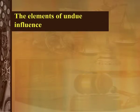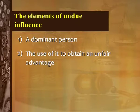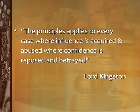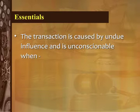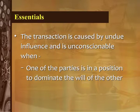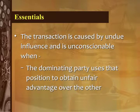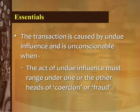The elements of undue influence are: first, a dominant person; second, the use of that dominance to obtain an unfair advantage. In the words of Lord Kingston, the principle applies to every case where influence is acquired and abused, where confidence is reposed and betrayed. Essentials: the transaction is caused by undue influence when one party is in a position to dominate the will of the other; the dominating party uses that position to obtain an unfair advantage; and the act of undue influence must range under one or other heads of coercion or fraud.